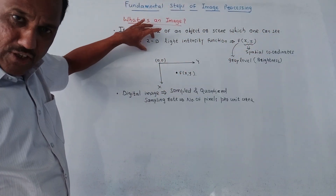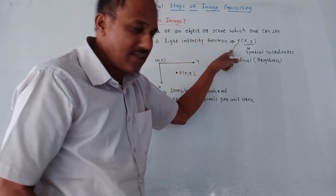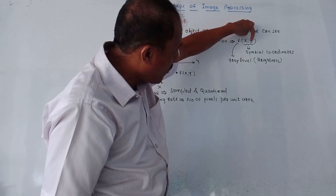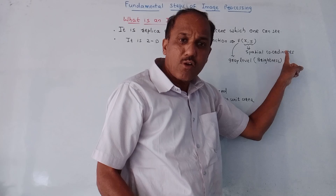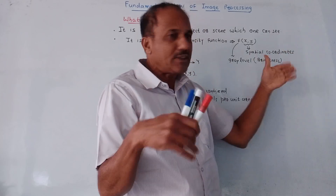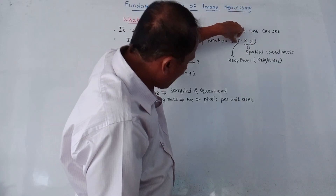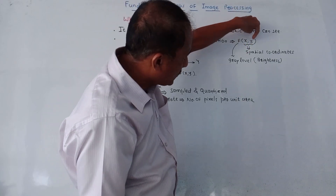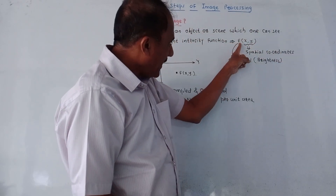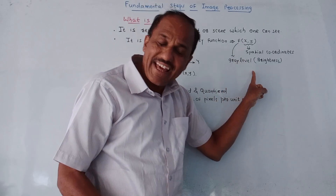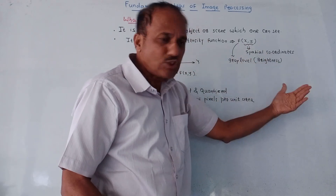Basically, an image is a two-dimensional function and it is a light intensity function. The notation is f(x, y), where x and y are called spatial coordinates — coordinates with respect to space. F is a function of x and y. These are spatial coordinates and f represents gray level, which is proportional to the brightness of the image.